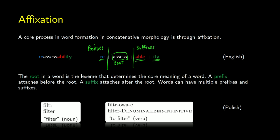In Polish, the word for 'filter' as a noun is a simple word with one morpheme — the root. The verbal form 'to filter' has the root plus two suffixes: a denominalizer to make it a verb, and the infinitive suffix. A common point of confusion is thinking something in the middle is an infix, but prefixes, suffixes, and infixes are defined by where they are relative to the root, not to other affixes.